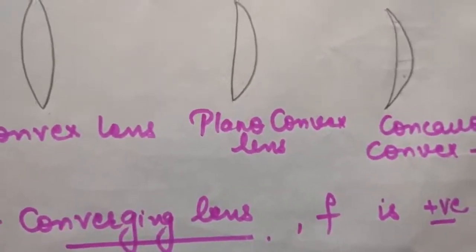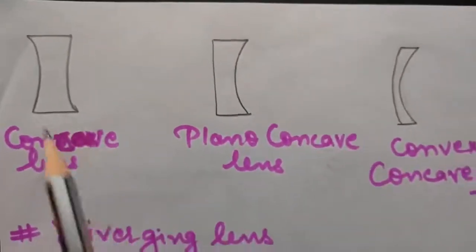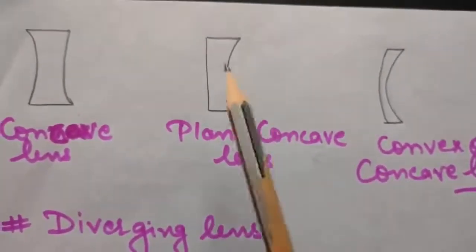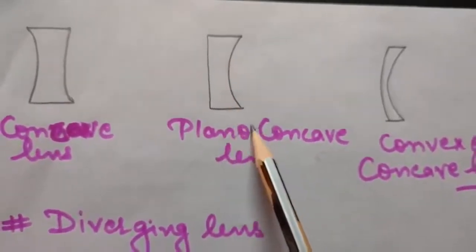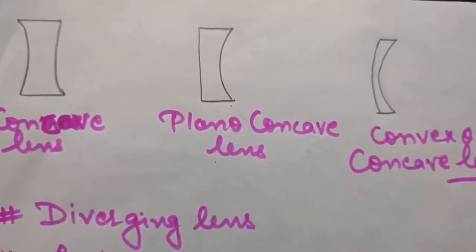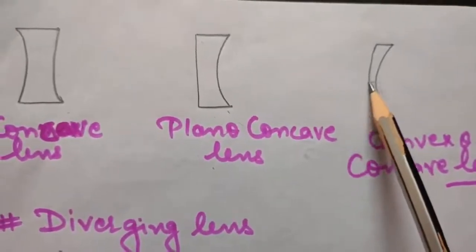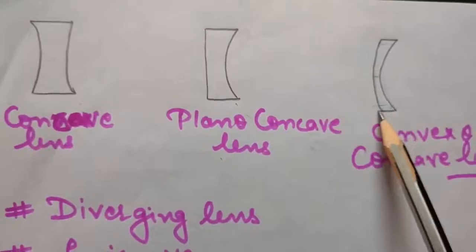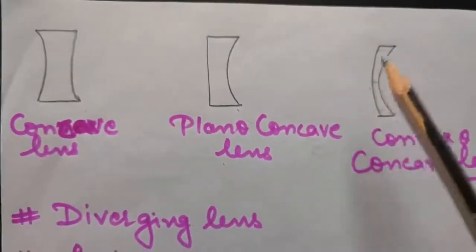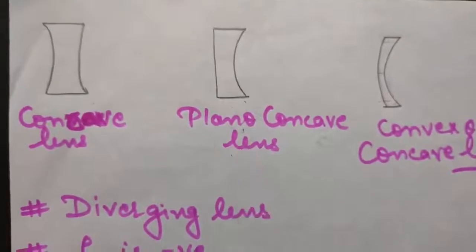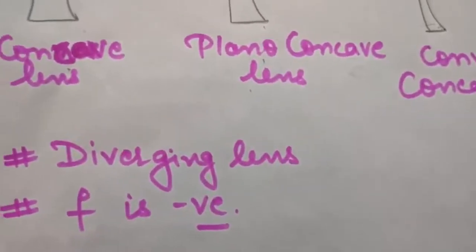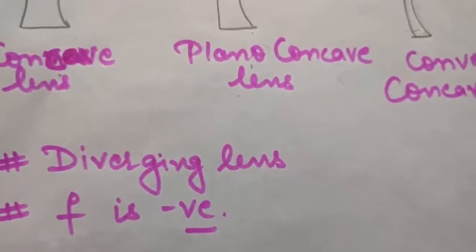A concave lens is thinner in the middle and thicker at the edges. A plano-concave lens has one side plane and one side concave. A convexo-concave lens has this side convex in surface. A concave lens is diverging — it makes rays go in different directions — and its focal length is negative.